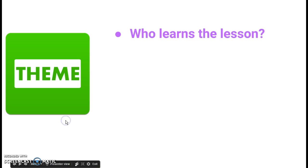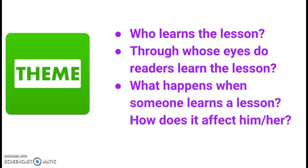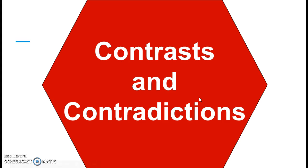Theme — remember L cubed — life lesson learned. Who learns a lesson? The reader learns the lesson through the eyes of the protagonist, the main character, who has the ability to change or evolve. What happens when someone learns a life lesson? How does it affect him or her? You look at the character, how they change from beginning to end — which we work with using contrast and contradictions. The character does something opposite to what they've done the entire time, or opposite from what you'd expect. Usually that change in the protagonist is a contrast contradiction, and they're going to learn it based on one part of the plot.